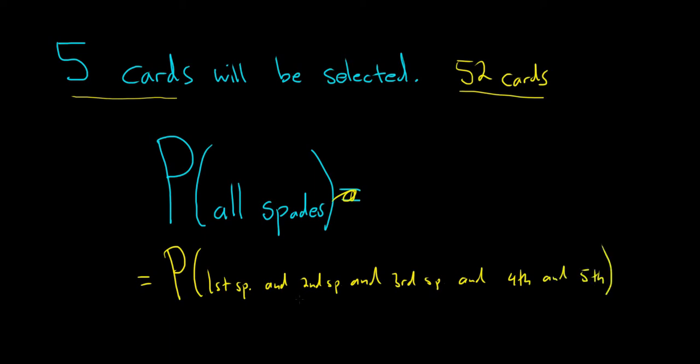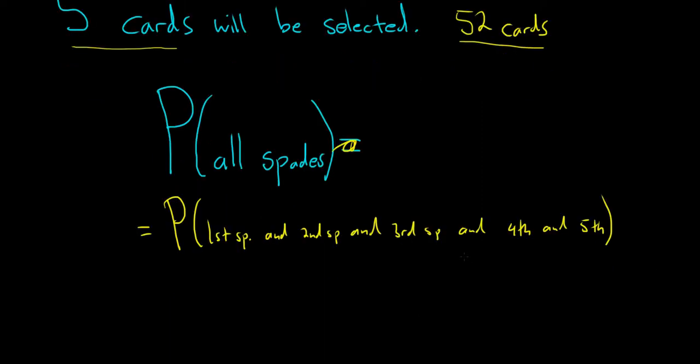So the first is a spade, the second is a spade, the third is a spade, the fourth is a spade, and the fifth is a spade. The key to figuring this out is to realize that the word 'and' is there, and that tells you to multiply. So now we just do each individual probability, and we multiply.